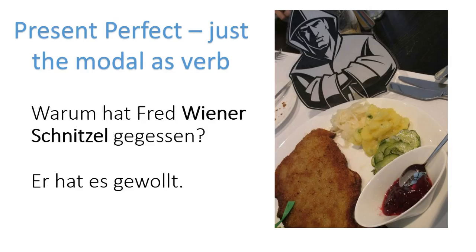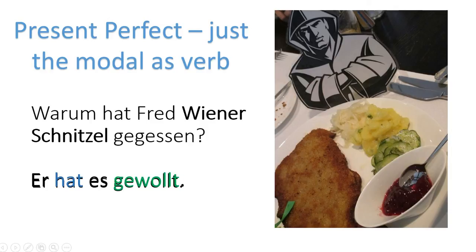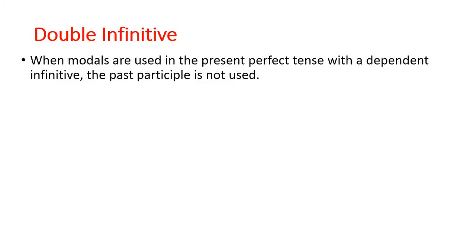Previously, when we just looked at the present perfect and we just had a modal, we would use this construction. So if the question was, warum hat Fred Wiener Schnitzel gegessen? — and we're just using the modal wollen, not worried about essen at all — it became: er hat es gewollt. So there's haben as our auxiliary. But when we have another infinitive as part of the sentence — when modals are used in the present perfect tense with a dependent infinitive — we don't have a past participle. That's where the double infinitive comes into play.